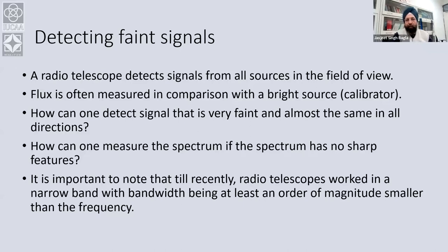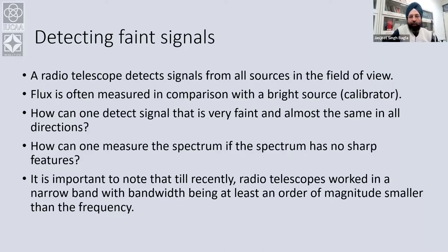You are able to say something about the flux from the source of interest. But if I am trying to look at something very faint that is almost the same in all directions, I run into a problem because I have no reference — every direction is almost the same. How can I make an estimate of the spectrum if the spectrum has no sharp features? For faint signals which are almost the same from all directions, that technique does not work. That was essentially the major challenge.